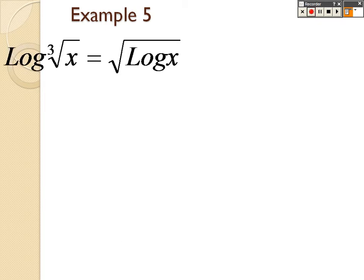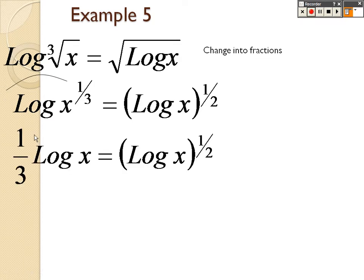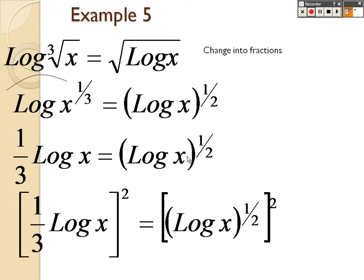So log root 3x equals the square root in the outside of log x. How do you solve this problem? Well remember the bases, if they aren't there, they're 10. So we're going to change them as best as we can into the fractions. So there's the fractions, no problem. Now that we got the fractions there, the next step is remember the rules, we can move that out in front. So that's one third log x, if you remember the rules from before. Then we have this little half out here as well. So what I'm doing is I'm squaring both sides to get rid of that. So when I do that, boom that's gone.